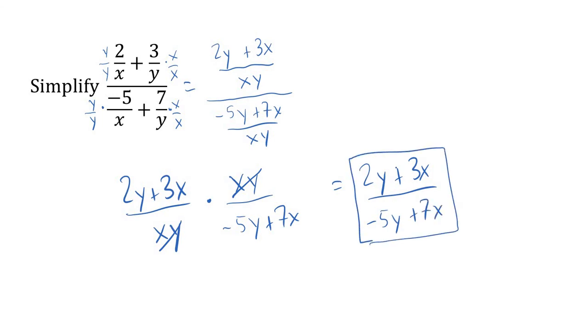There are different ways to do these, but that's the method I think makes the most sense as we start out. Get things together with a common denominator, then fraction divided by fraction. We know how to do those—we've already been working with them.